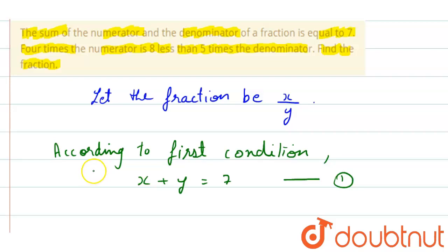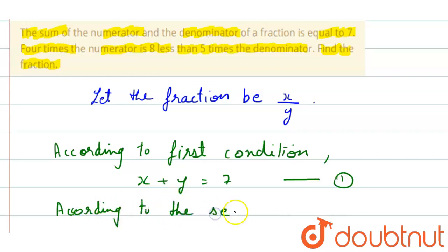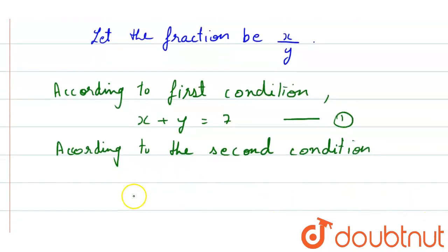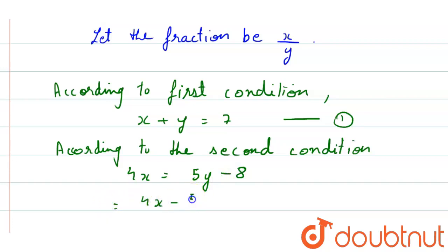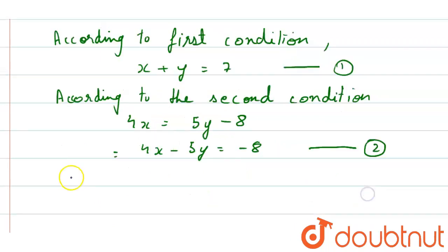Now, according to the second condition, it says 4 times the numerator is 8 less than 5 times the denominator. So we can write 4x equals to 5y minus 8, which gives us 4x minus 5y equals to minus 8. This is our second equation.